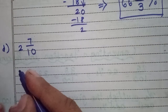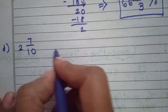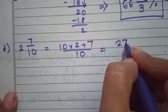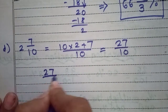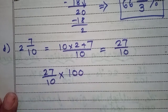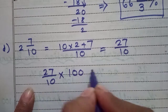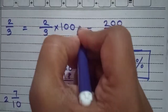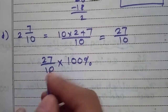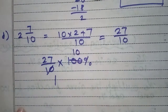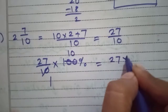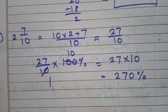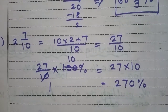The last example is 2 and 7/10. First convert it to an improper fraction: 27 by 10. Multiply 27/10 by 100. We can cancel: 10 and 100 — 10 ones are 10, 10 tens are 100, so 100÷10 = 10. Remaining: 27 × 10 = 270. The answer is 270 percent.